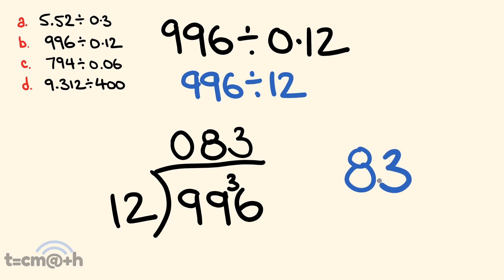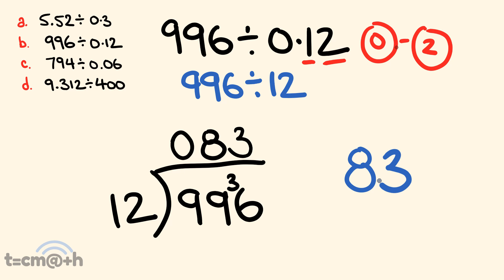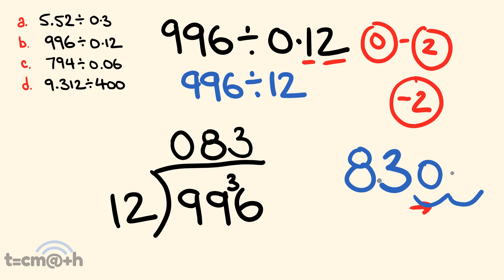So the first part of our answer is 83, and now we work out the decimal places. Looking at 996, there are 0 decimal places. We're dividing by 0.12, which has 2 decimal places. We subtract: 0 take away 2 equals negative 2. Because we have a negative number, instead of moving the decimal to the left, we move it to the right. Starting from the decimal, we move it 2 times and fill those gaps with zeros — our answer is 8300.